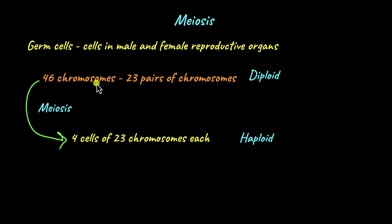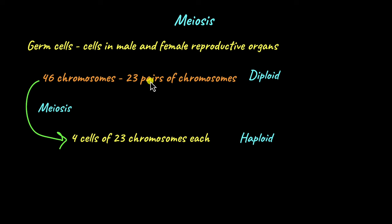But where did this extra 2 sets of chromosomes come from? Because if there are 23 pairs and it is splitting to become haploid, it should be 2 cells of 23 chromosomes, right? Where did those additional 2 sets come from? We will learn about that in just a while.